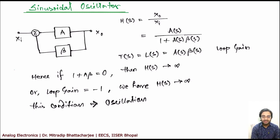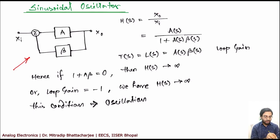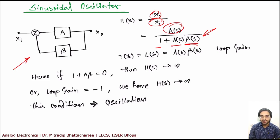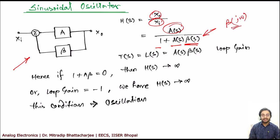Let us start with a normal feedback circuit and see what an oscillator actually means. In a normal feedback circuit, the transfer function is output by input, which is A(s) divided by 1 plus A(s)β(s). Previously, β was considered constant, but in this case β is not constant — it is frequency dependent, so we write β(jω).